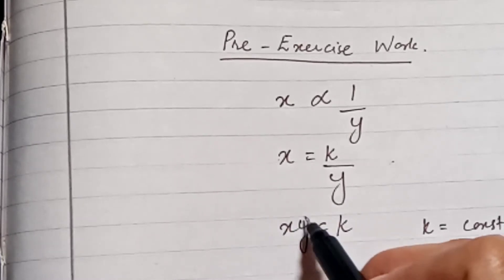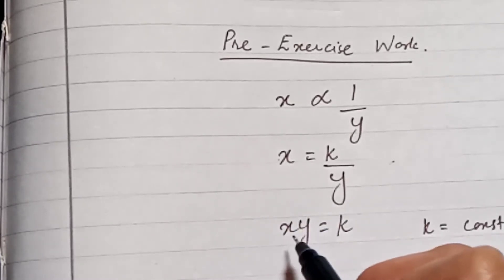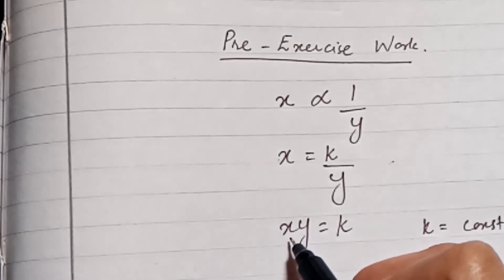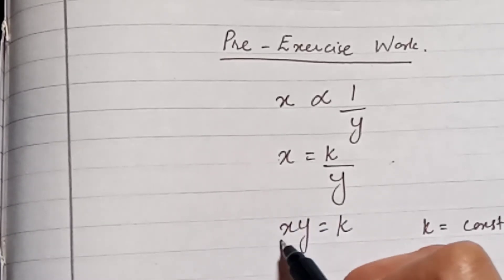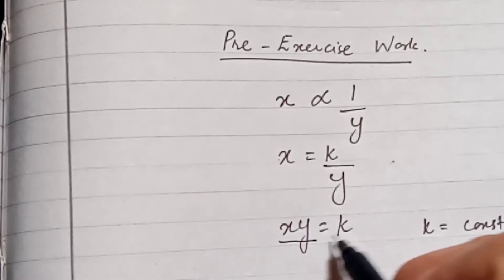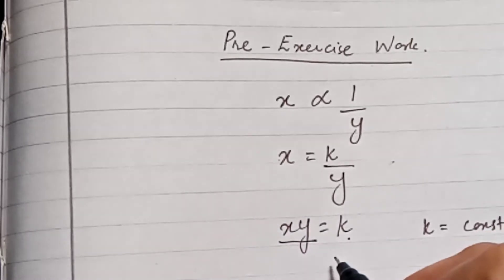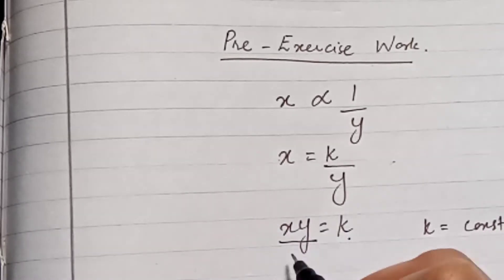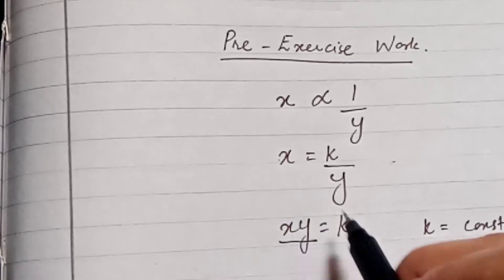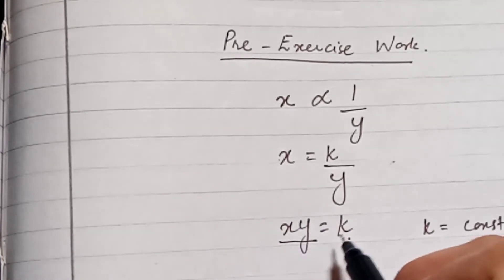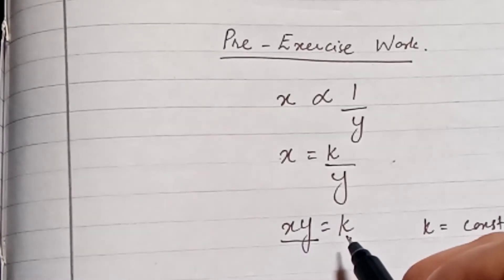When two variables are inversely proportional, their product is always a constant. Using this concept, I am going to solve question number three.